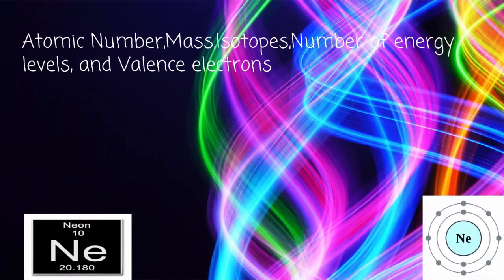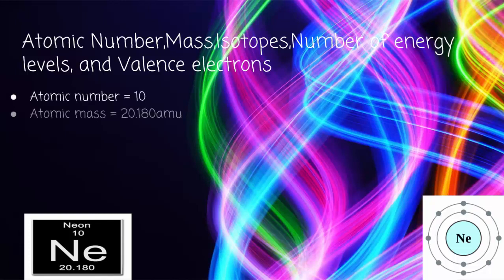The atomic number is 10. The atomic mass is 20.180 AMU. The isotopes of Neon are Ne-20, Ne-21, and Ne-22.